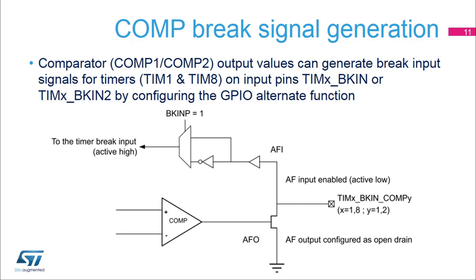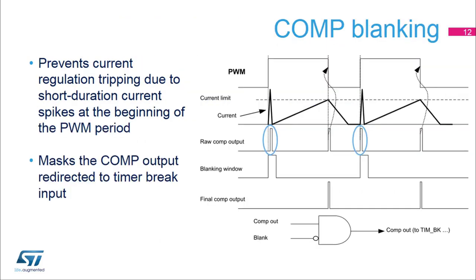The comparator can be used in the cycle-by-cycle regulation loop for monitoring the peak value of the current flowing into the load. The purpose of the blanking function is to prevent incorrect current regulation tripping due to short-duration current spikes at the beginning of the PWM period. Short current spikes caused by activating power switches can produce false pulses on the comparator output, marked by the blue color on the diagram. These pulses need to be masked by a blanking window to avoid false fault detection. The blanking window waveform can be generated by one of the timer output channels.